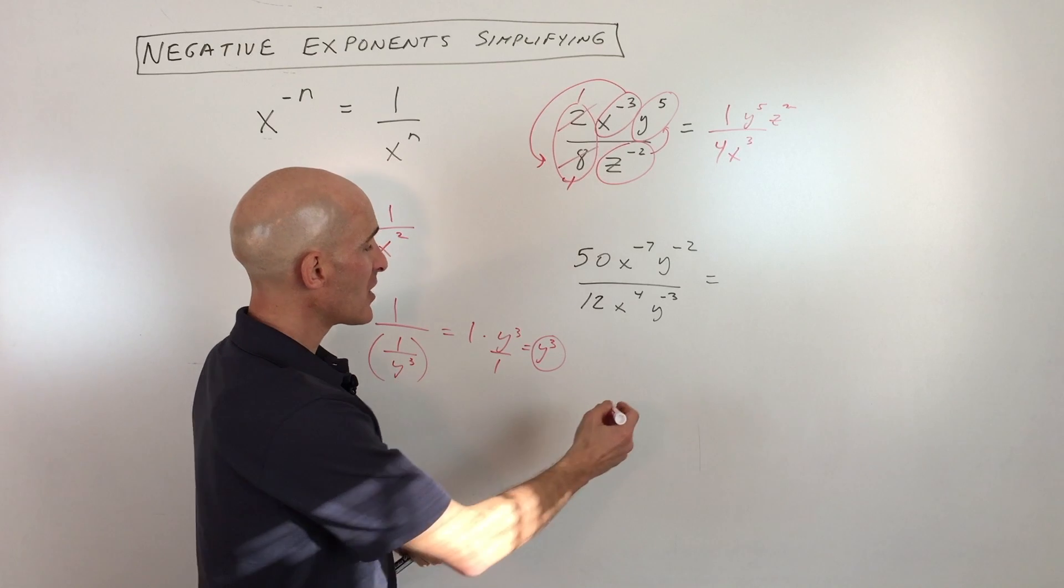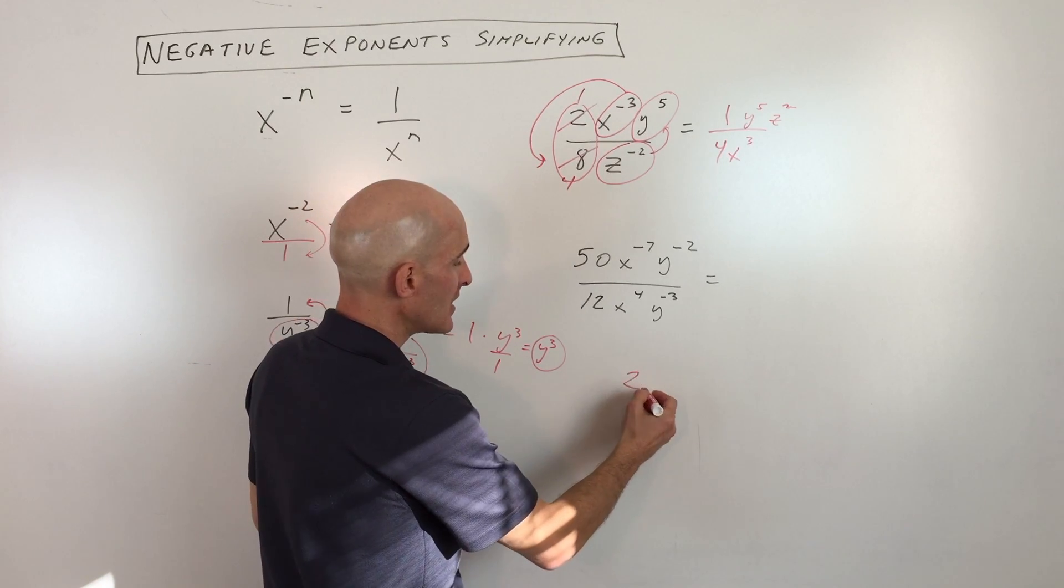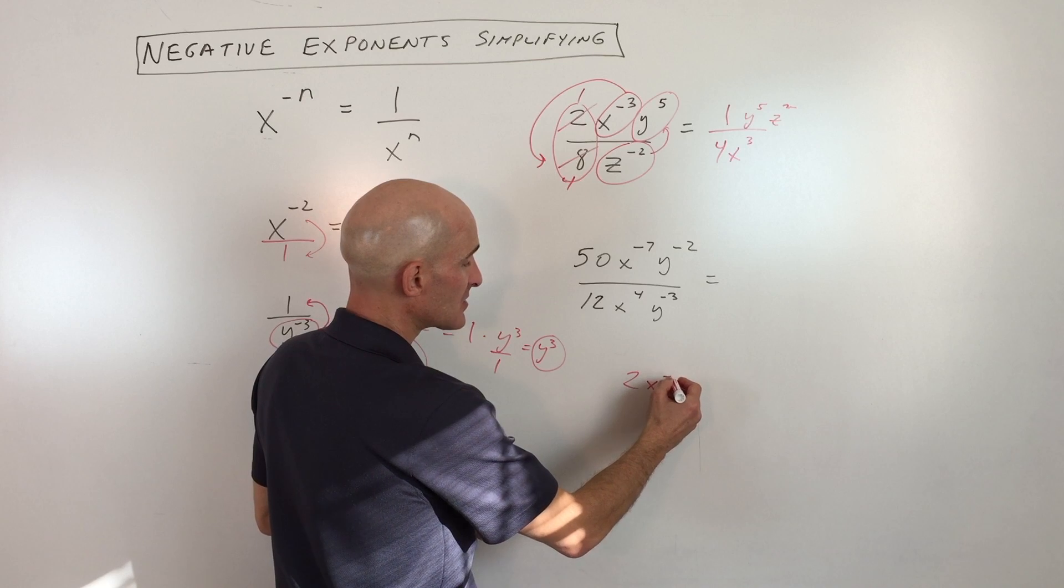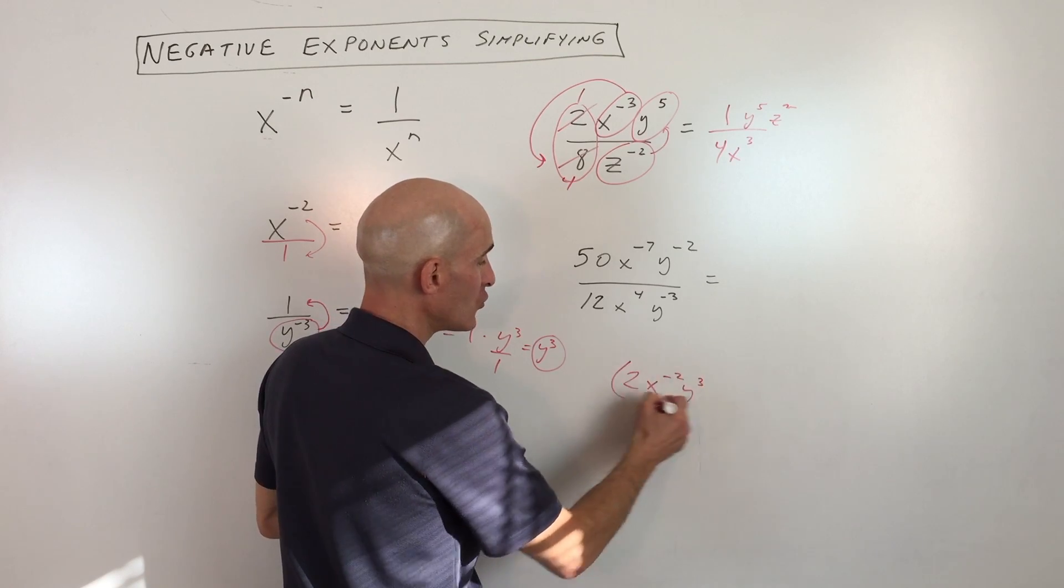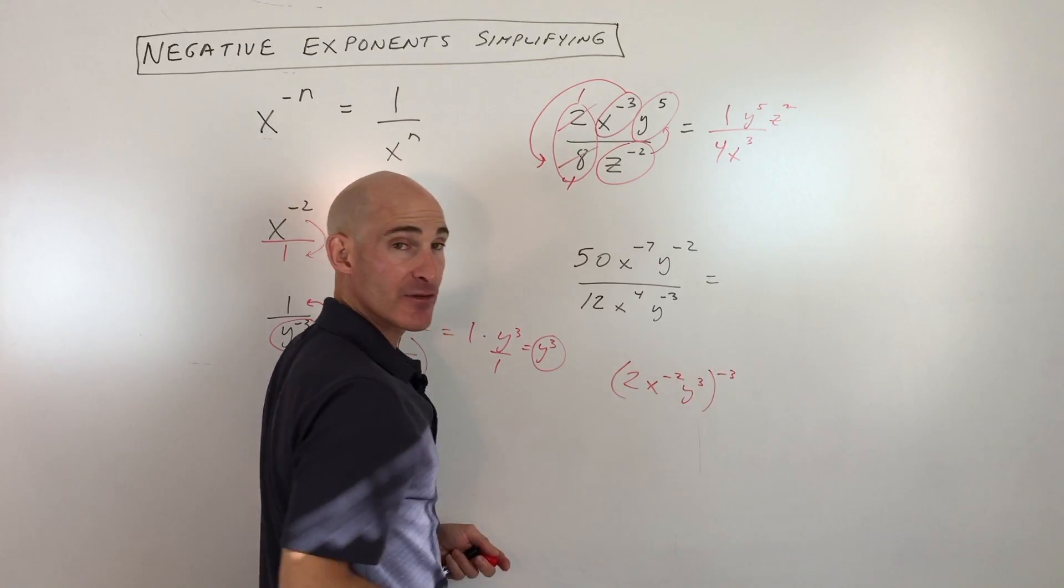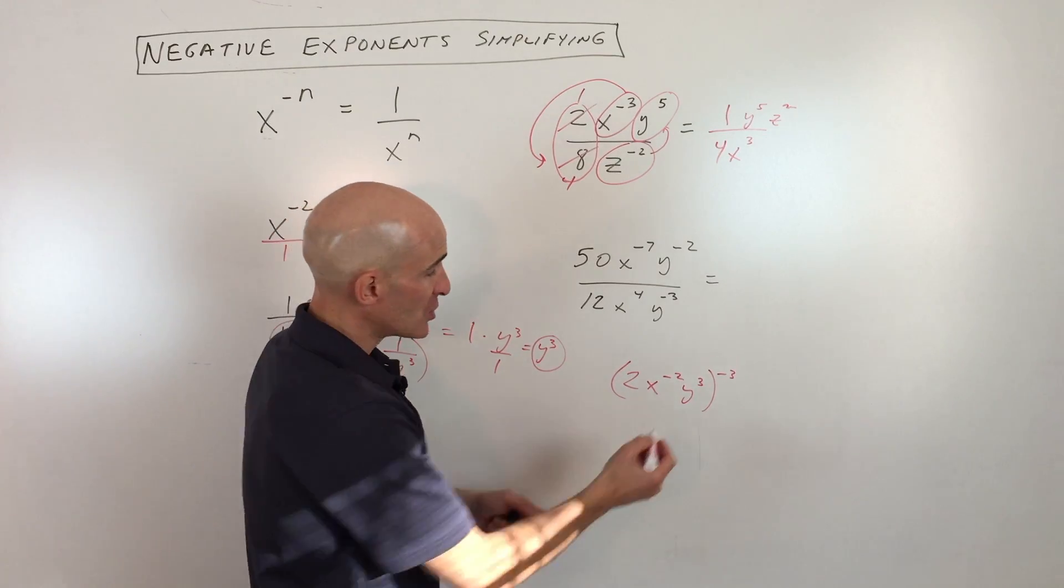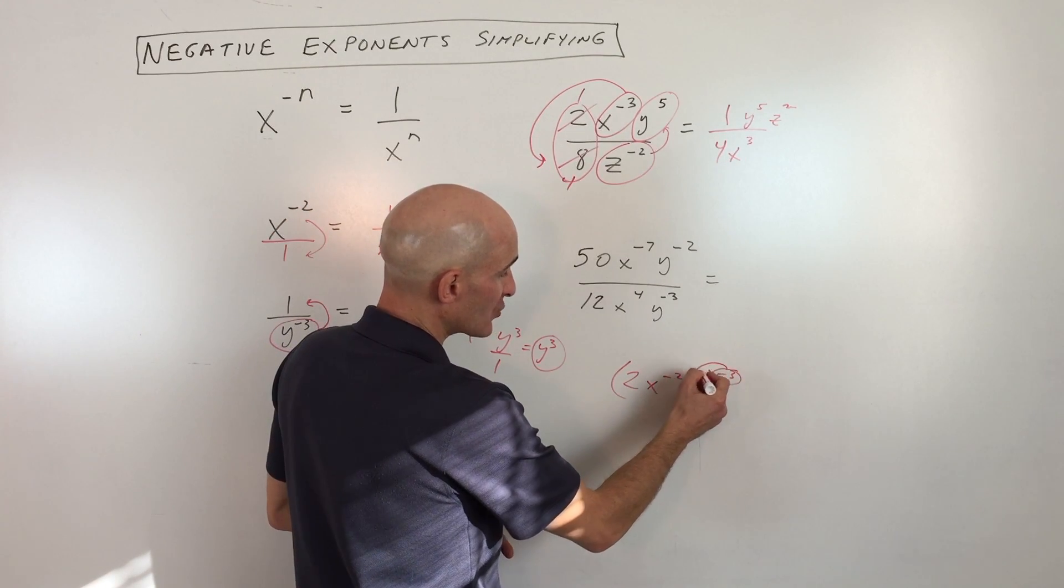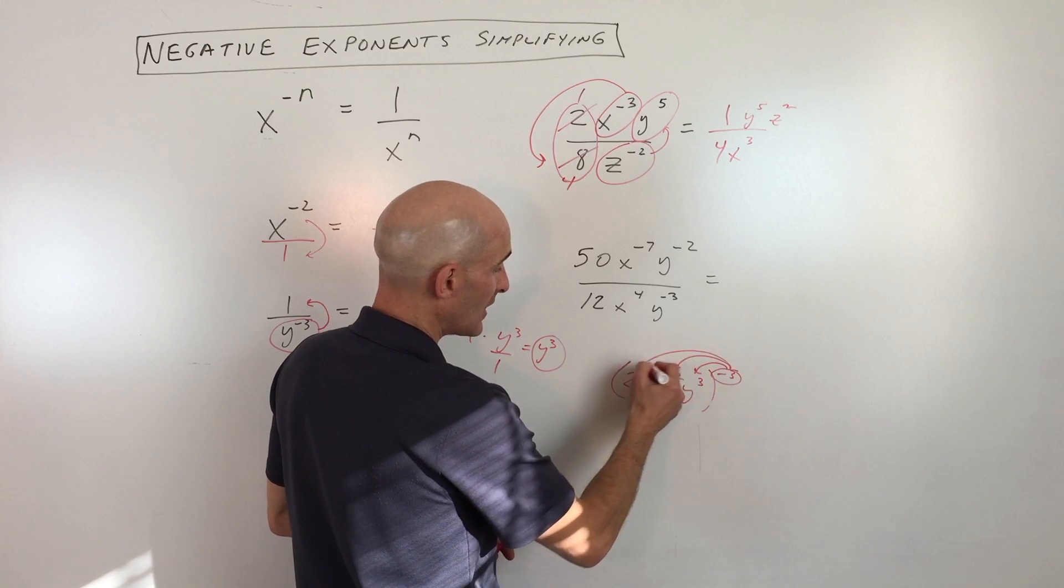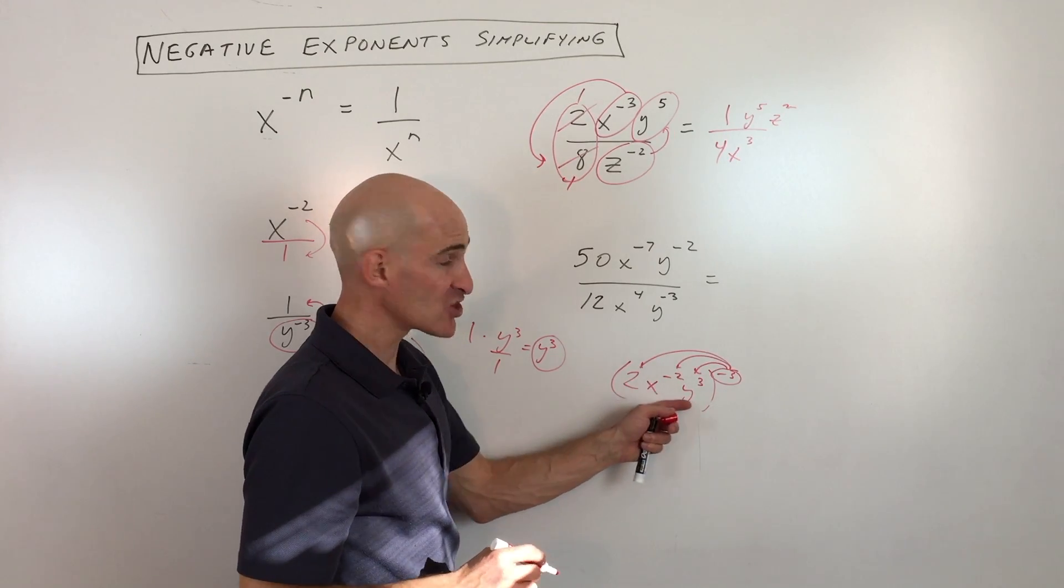Say for example, if you had 2x to the negative 2y cubed, all to the negative third power. So what you could do is you could take this negative 3 and you're going to distribute it to each of these terms. Now this is just a monomial, just one term, so you just raise everything to that negative third power.